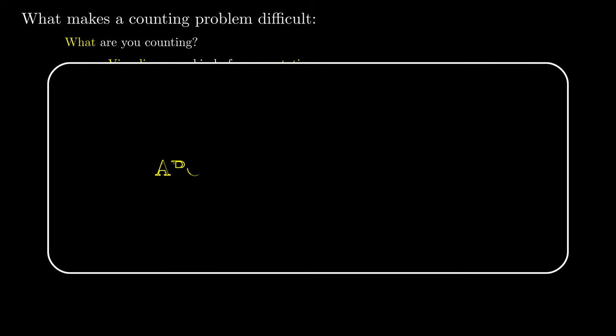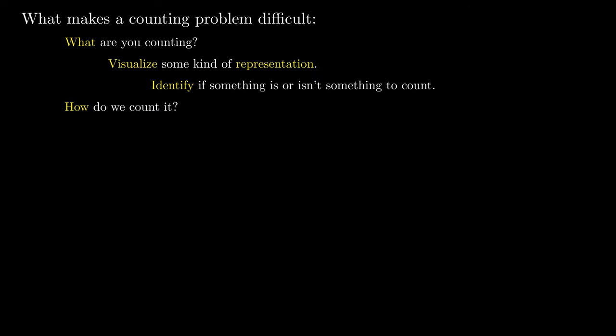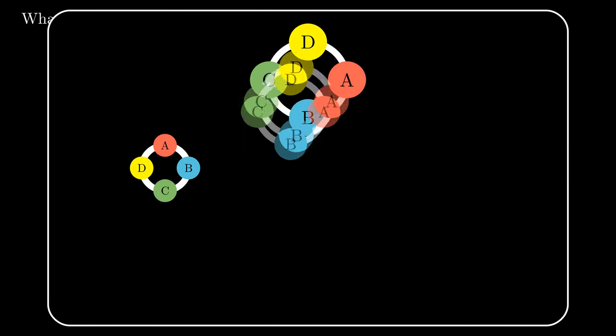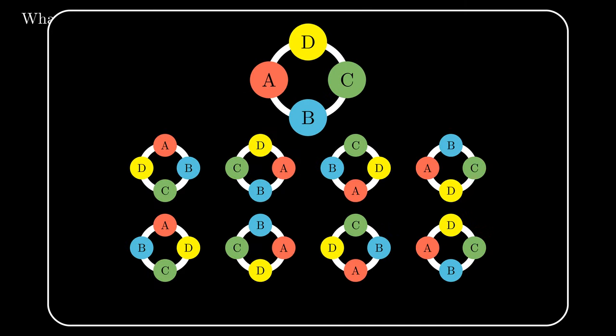If an arbitrary representation is given, we should be able to identify whether or not this representation is a part of the list we're counting. In other words, be able to identify if something is or isn't something we want to count. Secondly, you should be able to tell whether two objects on your list are considered the same or different. What does it mean for two keychains to be the same keychain? If you can't tell if two keychains are different, how can you be sure you're not overcounting?